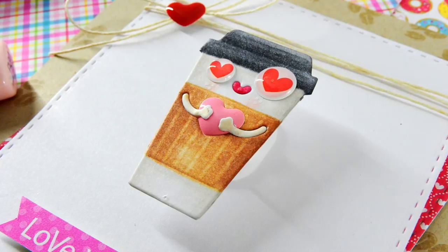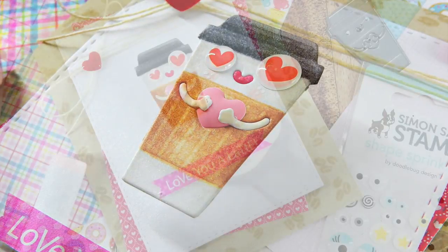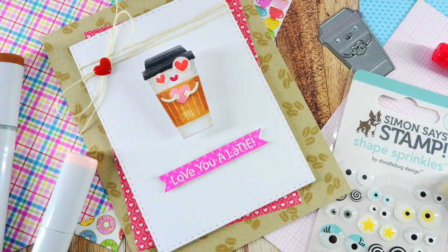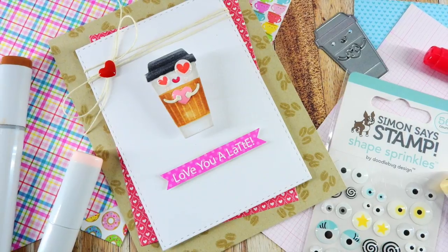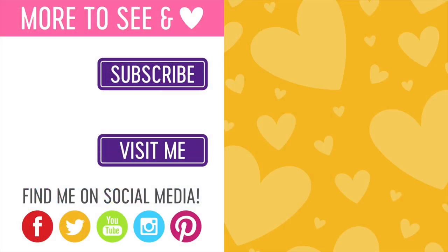So I hope this video has given you some inspiration on using the Doodlebug Coffee Love Collection, along with a few other fun products, including the shape sprinkles for Simon Says Stamp by Doodlebug. If you have any questions, please leave them in the comments section below, and head on over to the Simon Says Stamp blog where you can get more information on this card, including still pictures and products used. Thanks so much for watching. Be sure to give this video a big thumbs up, and subscribe to our channel for more inspiration. Thanks for watching. I'll see you again soon. Bye.